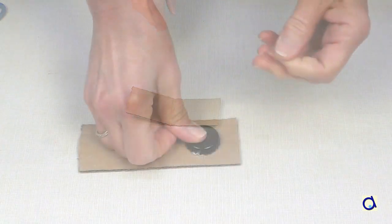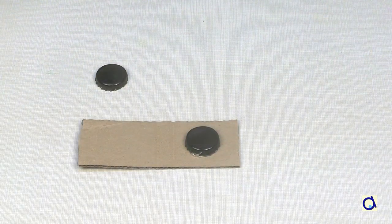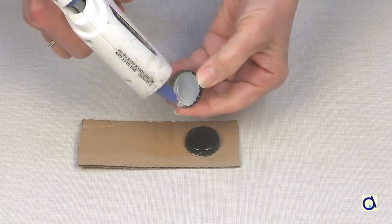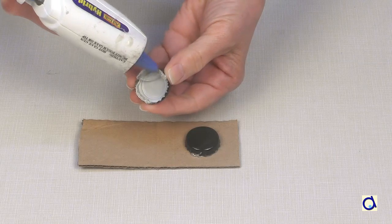You will need two crown caps as found on beer bottles for example. Glue the crown caps on opposite sides of the cardboard strip so that when you fold it, the caps hit each other.